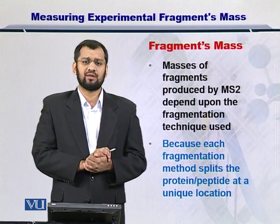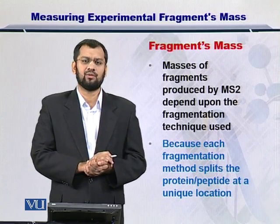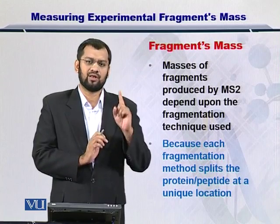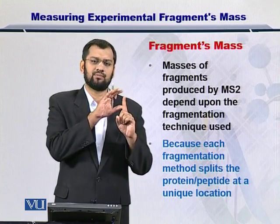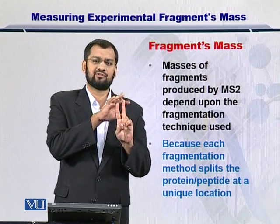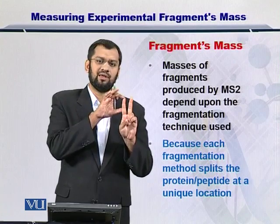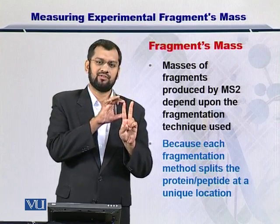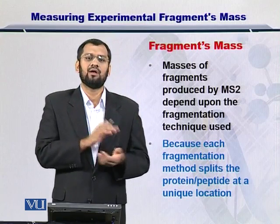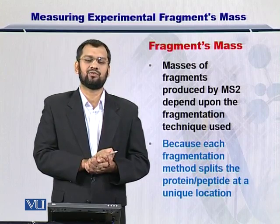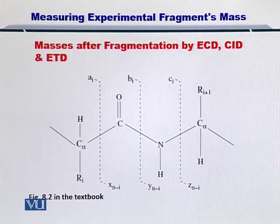Once you have fragmented the protein, you can measure the molecular weight, and instead of one peak that was there in MS1 for the intact protein or peptide, now you will have two peaks for B and Y, or C and Z, or A and X ions. Therefore, you will have twice the number of peaks compared to MS1. In this example, I will show you how exactly this fragmentation process occurs in order to clarify the concept further.